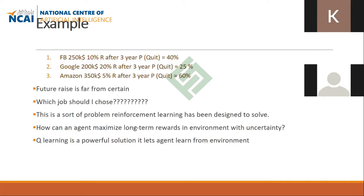There is significant uncertainty about the raises and about quitting each job. How can someone choose among the three? This is a problem with uncertainty, and this is exactly the kind of problem where we use reinforcement learning for the solution. The purpose is to get maximum reward after three years given this uncertainty. RL will help you compute the maximum reward given the current states and transition probabilities.